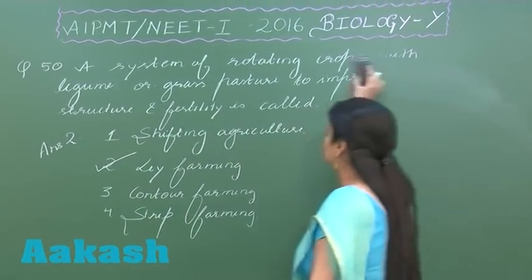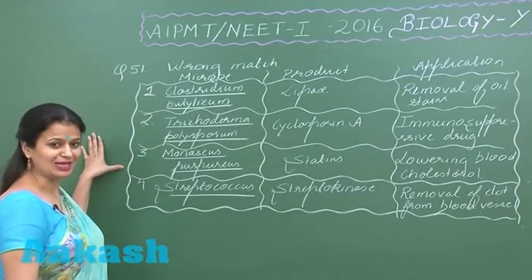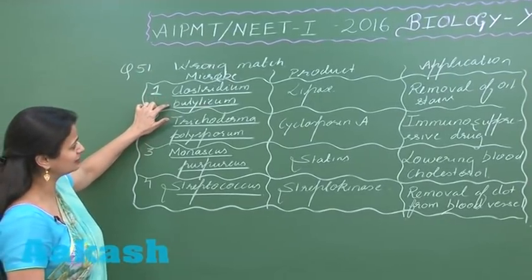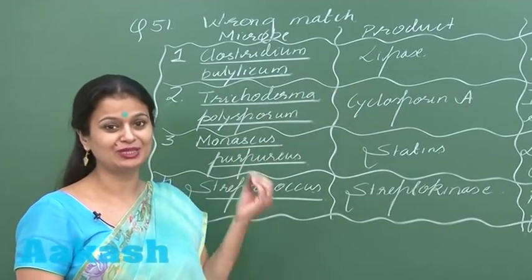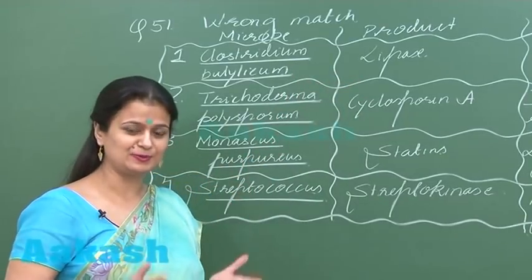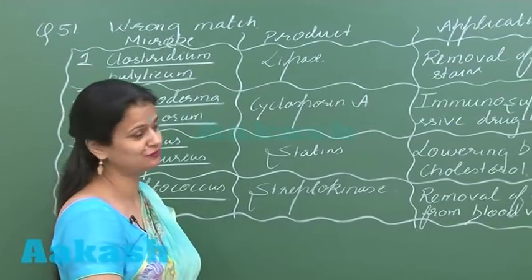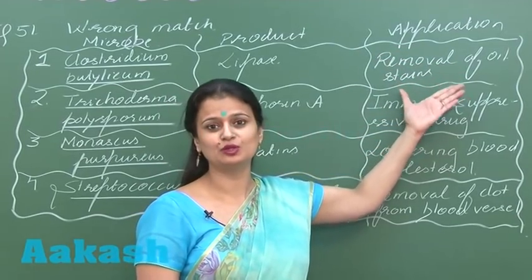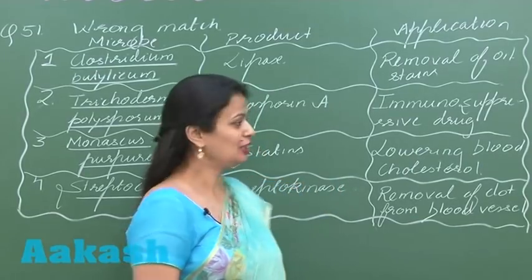In question number 51, we have to look for a wrong match. If you see option number one, Clostridium butylicum — it results in the production of butyric acid, not lipase. Lipase enzymes are produced by fungi, and lipases are used for the removal of oil stains; they are a component of detergents.